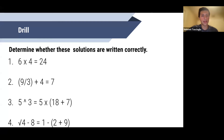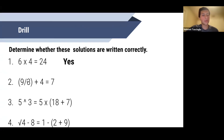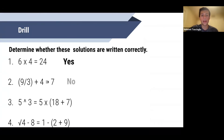Let's go over the answers. Number one: six times four equals 24. Pay attention to the symbol — we're using the × symbol, which is what's allowed. Yes, this solution is written correctly. Number two: nine slash three plus four equals seven. Nine divided by three is three, plus four is seven — mathematically this is right. But you cannot accept the solution because the slash is not allowed to represent division in equations. You can only use the ÷ symbol. Even though the math checks out, this is wrong.